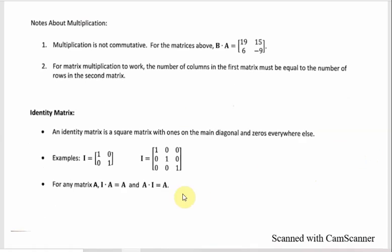To get inverses, you first need to understand the identity matrix. An identity matrix is a square matrix with ones on the diagonal and zeros everywhere else. For a 2×2 it has ones on the diagonal and zeros in the other two spots; for a 3×3 it has ones on the diagonal and zeros elsewhere. For any matrix A, multiplying by the identity matrix in either order — I times A or A times I — gives A back. It works exactly like multiplying by 1.